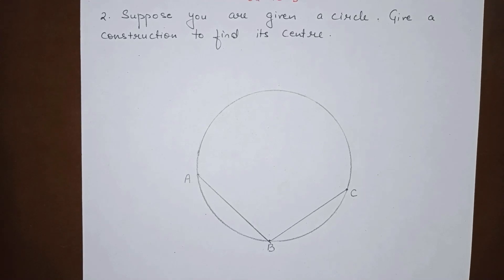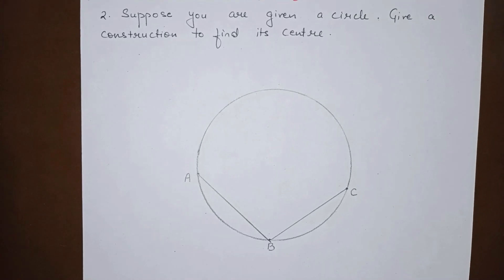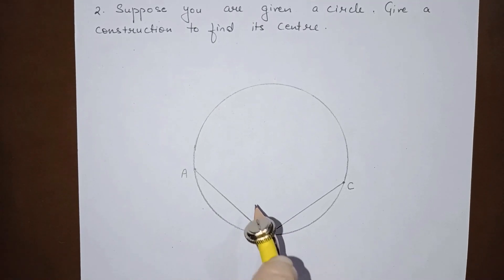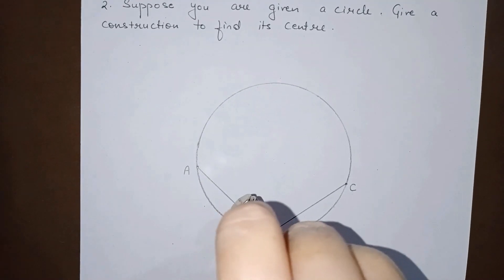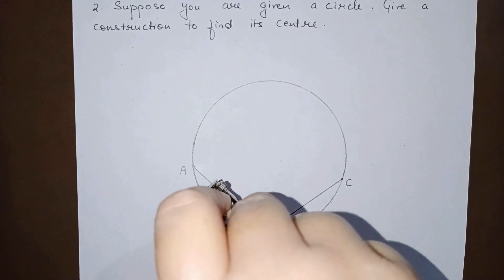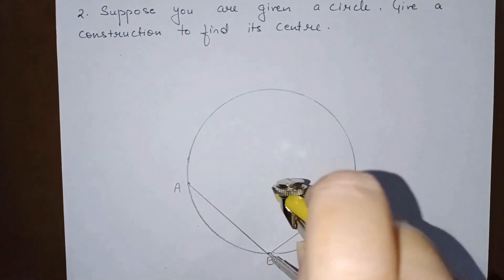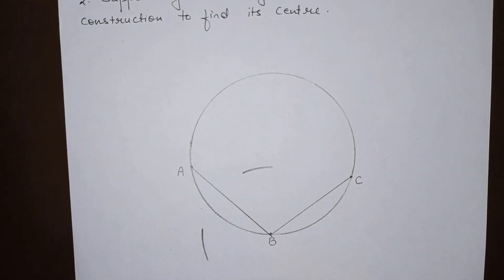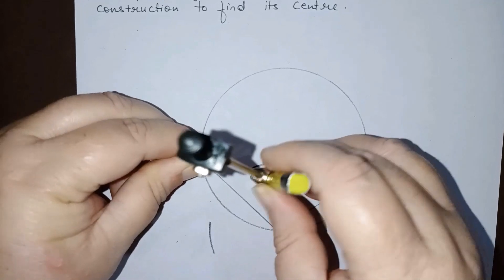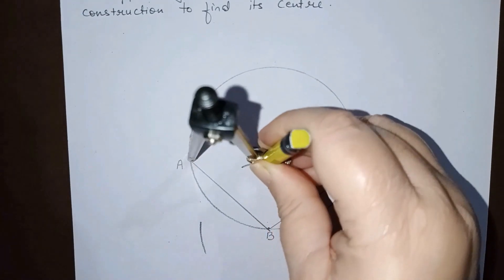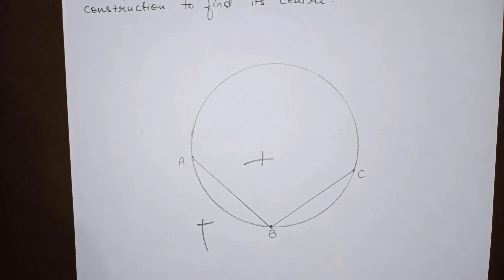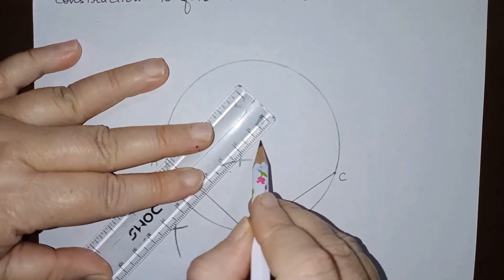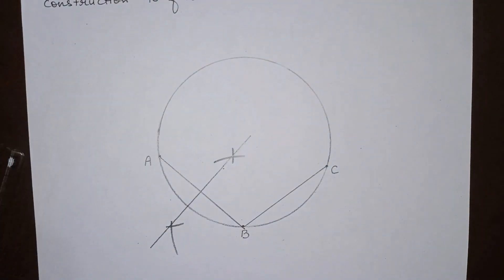Next step is we have to draw perpendicular bisectors of these chords. You have to draw the perpendicular bisector of AB. The method is you keep your compass at B and open it approximately more than half of AB and draw 2 arcs, one here, one here and similarly do it from point A. Keep it at A, this arc and this arc. We have formed perpendicular bisector of AB. This is the perpendicular bisector of AB.